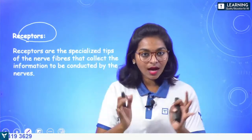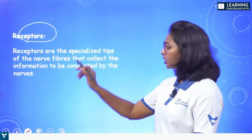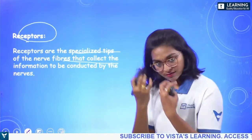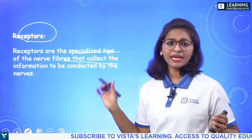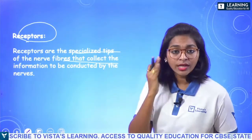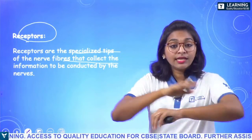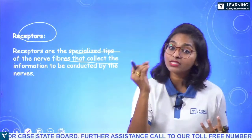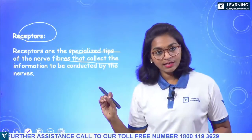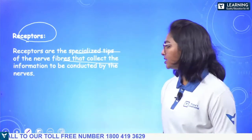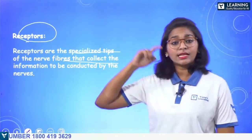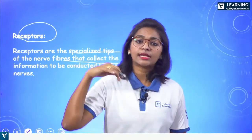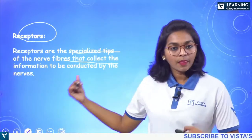The eyes, ears, skin, and tongue — all those are collectively called receptors. A receptor is a specialized tip of a nerve fiber that collects information — it can be through sound, light, heat, or anything. These nerve endings collect the information, send it through nerves to the central nervous system and peripheral nervous system, and help in producing a response.